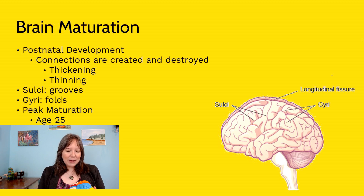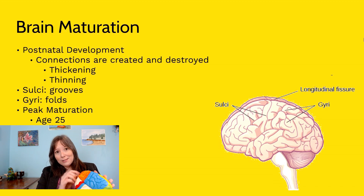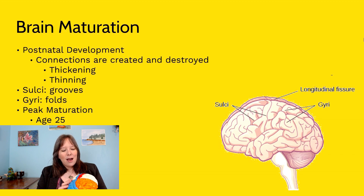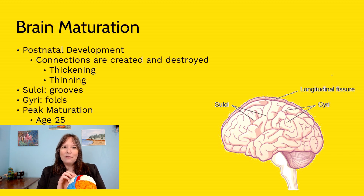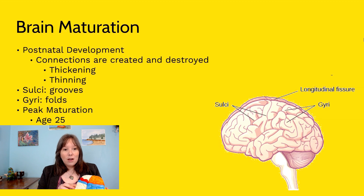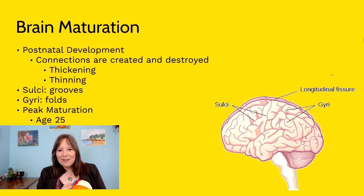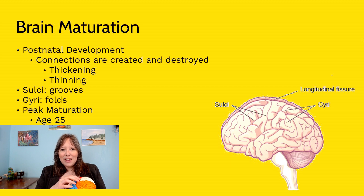Before moving on, we should note the grooves of the brain: we have the sulci and the gyri. The sulci refers to the grooves and the gyri refers to the folds. You can see in the diagram that the sulci are really the grooves and the gyri are really the folds.